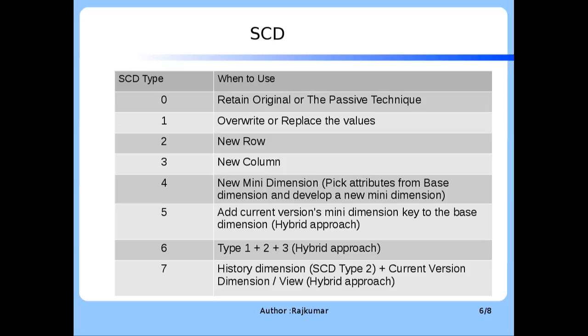SCD Type 5 adds the current version's mini dimension key to the base dimension, and this is a hybrid approach. SCD Type 6 is also a hybrid approach, dealing with a combination of SCD Types 1, 2, and 3. SCD Type 7 is again a hybrid approach which deals with a history dimension table of SCD Type 2 and a current version dimension table, which can also be replaced by a view. So these are the different SCD types.